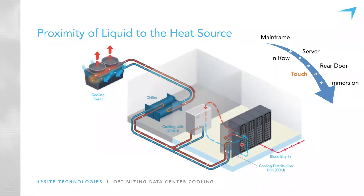This is the first time that we get liquid back to the source. With direct liquid or touch cooling, we have either a row-based or rack-mounted cooling distribution unit — a liquid-to-liquid heat exchanger that transfers heat picked up from the IT components by liquid to another liquid used to carry it out of the building. Liquid now flows through each of the components in the cabinets, picking up heat from the source and transferring it to another liquid.